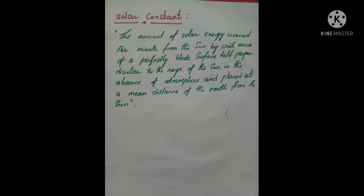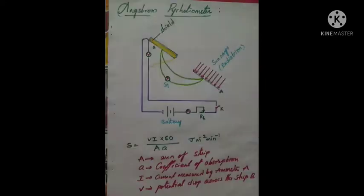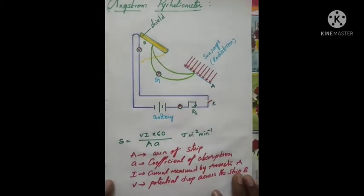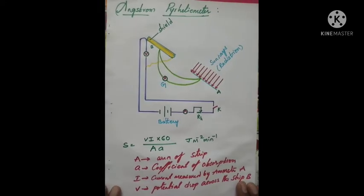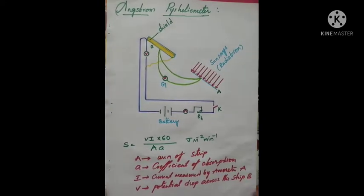The instrument devised for determining the solar constant is called a pyrheliometer. This is the Ångström pyrheliometer, which was designed by Ångström to measure the solar constant.